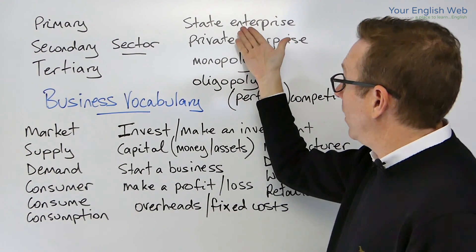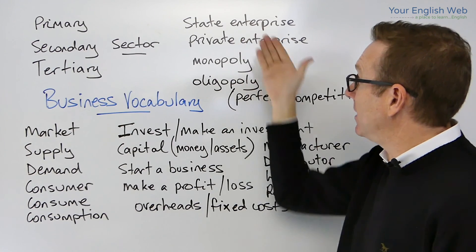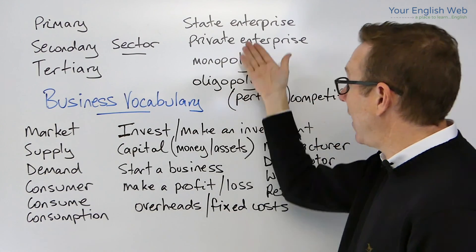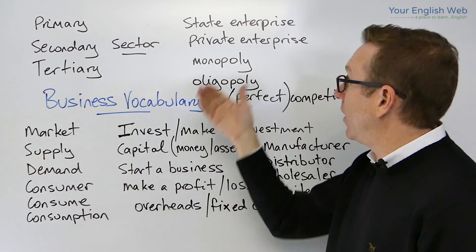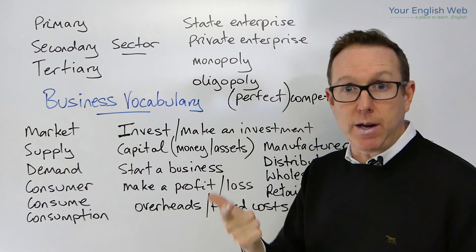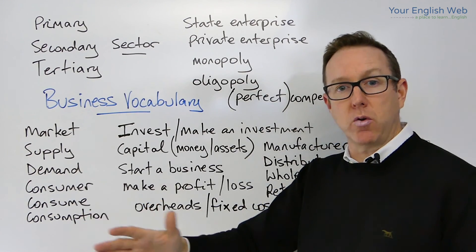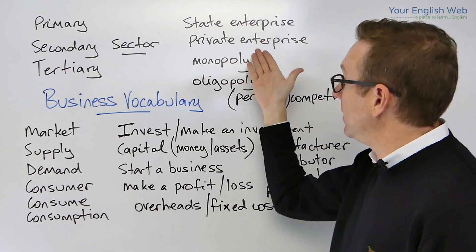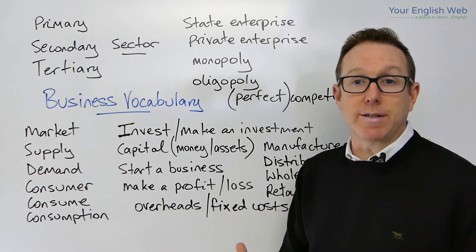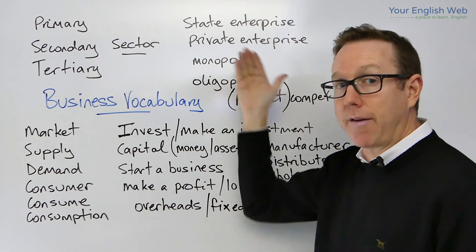Inside particular countries we can have state enterprises or private enterprises. When I was younger it was very common to have state enterprises for the telephone company, the gas company, and the electric company — they normally belonged to the state. But there was a process many years ago where state companies became private companies; the governments sold them. For example, the Australian telephone company Telstra became private, going from a state company to a private company, as did Qantas Airlines.